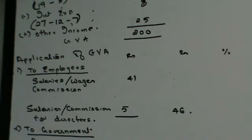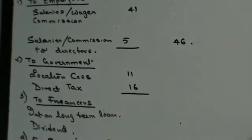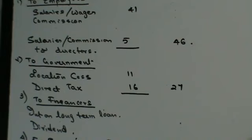Next, cess and local taxes was 11. Then we check: is there anything else? Do we have direct taxes? Yes — direct taxes are 16, given in the income statement as provision for tax. So this comes out to 27. We need to fund direct tax from this. Interest on long-term loans: 12 and 7, so this is 19.